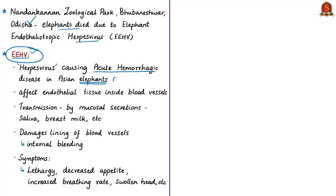This virus causes acute hemorrhagic disease among elephants, particularly young elephants — the elephant calves. More serious cases of this virus attack are observed among Asian elephants. Hemorrhagic means pertaining to bleeding or abnormal flow of blood. As a result of this excessive bleeding, it can lead to death, making it a fatal disease. The word 'endotheliotropic' in the name describes the tissue attacked by this virus.